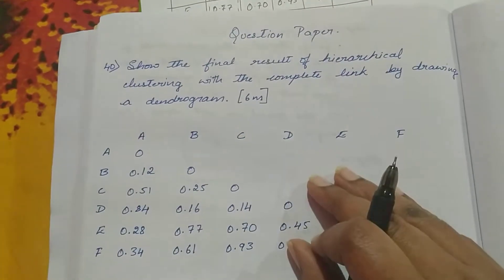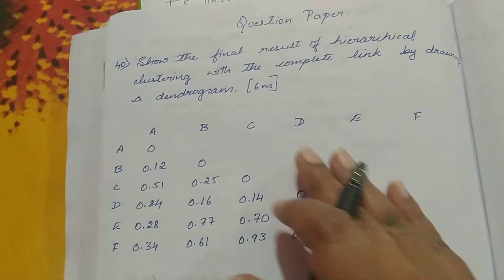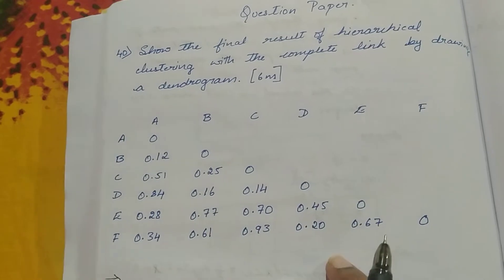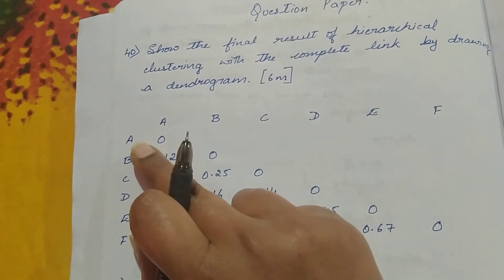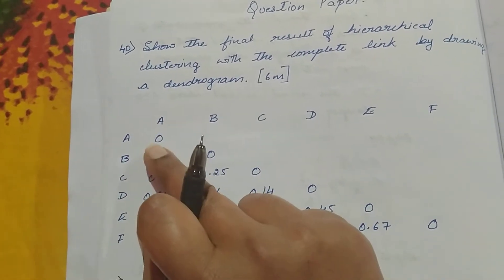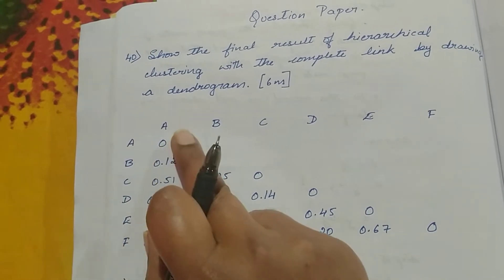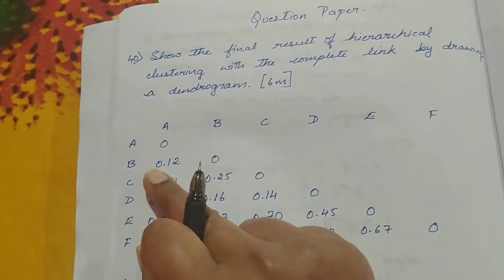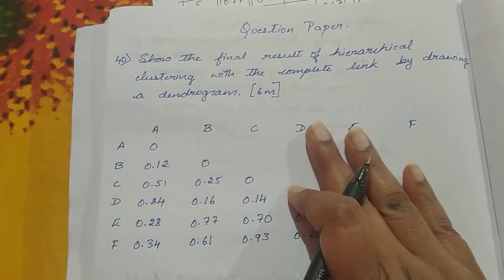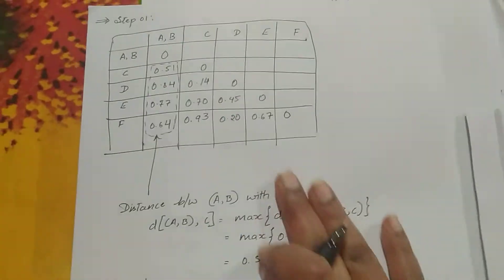First we'll solve the problem of hierarchical clustering with the complete link approach. The question gives us a distance matrix. Here A-to-A means the distance between point A and point A; since it is a self-node, it is zero. B-to-A means the distance is 0.12, which is the same as A-to-B. The lower triangle gives the values.